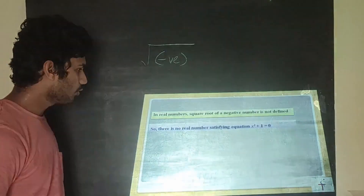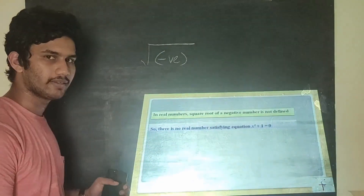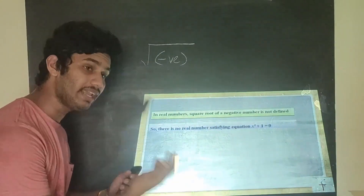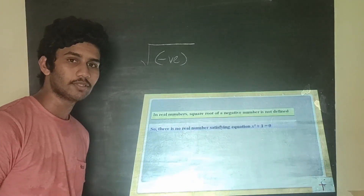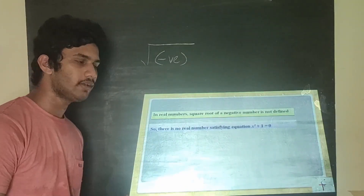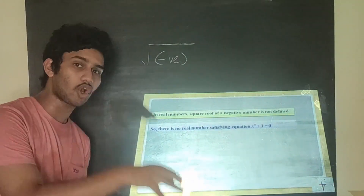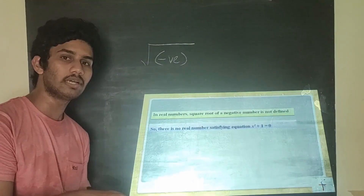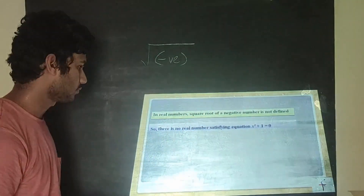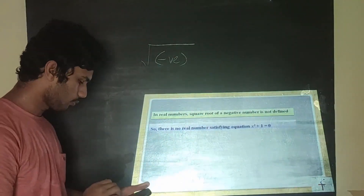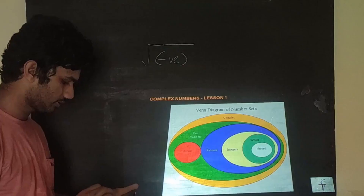In the real number system, the square root of a negative number is not defined. But since we do have square roots of negative numbers, we have a separate number system — complex numbers — which also confines all the real numbers. So let's move on to that.